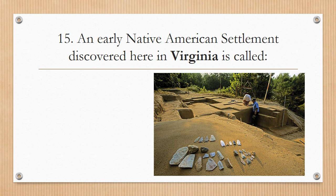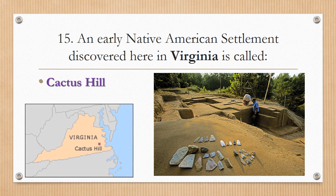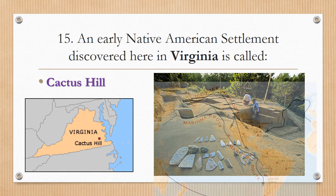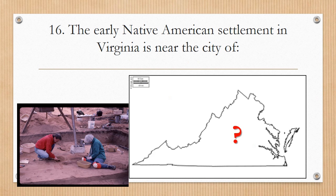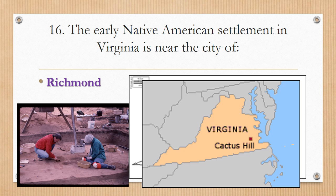Number fifteen: An early Native American settlement discovered here in Virginia is called Cactus Hill. Cactus Hill is located in Virginia, and you can see several of those ancient settlements all over North and South America, perhaps having come through the theories we talked about — the Land Bridge Theory or the Maritime Route. Number sixteen: The early Native American settlement in Virginia, Cactus Hill, is near the city of Richmond.